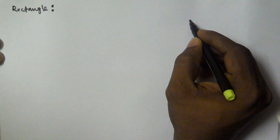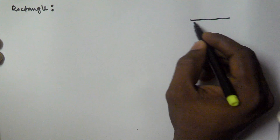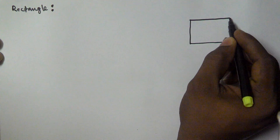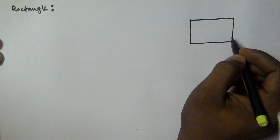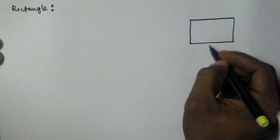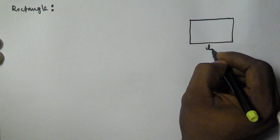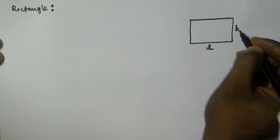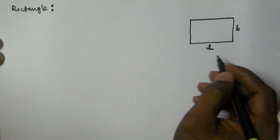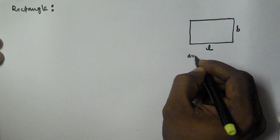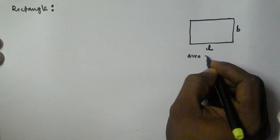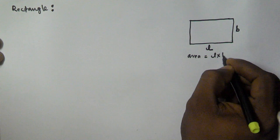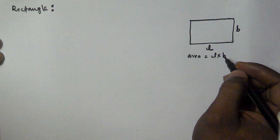The rectangle shape is like this — the opposite sides are equal. This side is called the length and this one is called the breadth. The area of the rectangle is going to be equal to length into breadth, that is L into B.